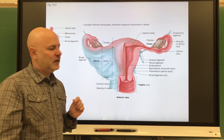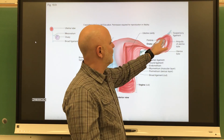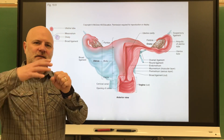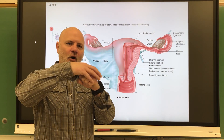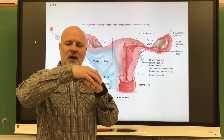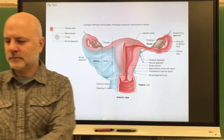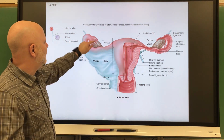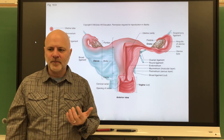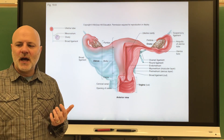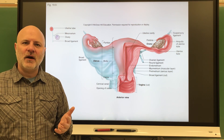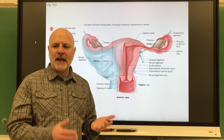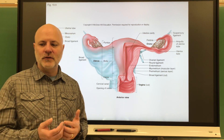The fallopian tubes and the ovaries are not directly connected — the ends of the fallopian tubes lay over the ovary. At the end of the ovaries you can see these finger-like projections called fimbria, and these cover over the ovaries and guide the oocyte, the immature egg, into the fallopian tubes.